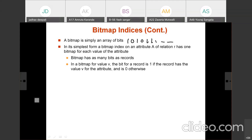A bitmap has as many bits as there are records. If there are 10 records in the file, there are 10 bits in the bitmap; if there are 20 records, there are 20 bits. In a bitmap for value V, the bit for a record is 1 if the record has the value V for the attribute, or 0 otherwise. For example, for the male bitmap, if the record has M, the bit is 1; if it is F, the bit is 0.